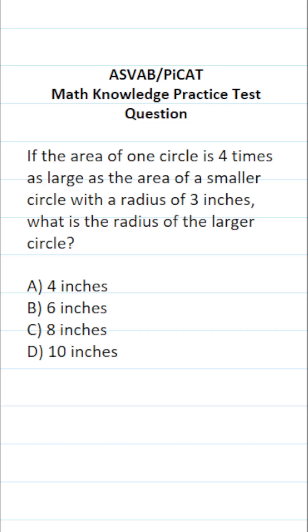This math knowledge practice test question for the ASVAB and PyKET asks: if the area of one circle is four times as large as the area of a smaller circle with a radius of three inches, what is the radius of the larger circle? We're talking about the area of two circles, so let's write down that formula twice. On the actual ASVAB and PyKET, you're not given a reference sheet or calculator, so you have to know these formulas by heart. You find the area of a circle using the formula area equals pi r squared, where r refers to radius.